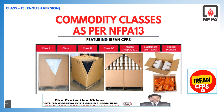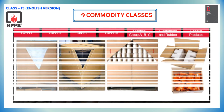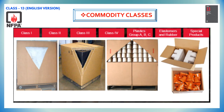Hello everyone, welcome to Irfam CFPS YouTube channel. In today's class we shall go through commodity classifications as per NFPA 13. Let's begin our class with types of commodity classifications. Commodity classifications are broken down into class 1 through class 4 and group A through group C plastics, with class 1 being the lowest hazard level and group A expanded plastics being the highest hazard level.